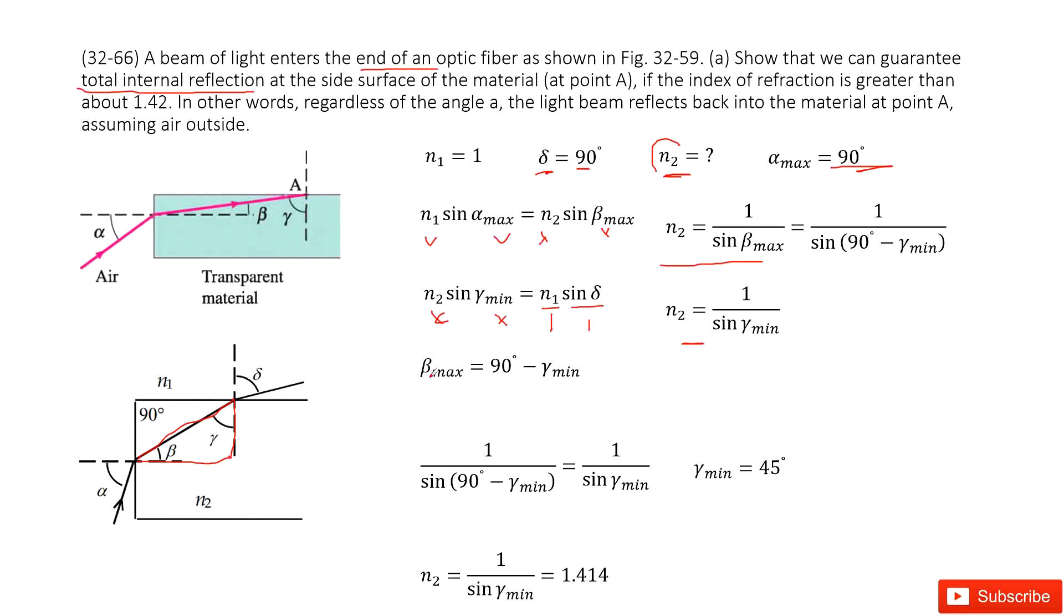For this equation, we have beta_max. So we input beta_max inside, it becomes sin(90 degrees minus gamma_min). Now from these two equations, you can see n2 can equal this term, n2 can also equal this term. So that means these two terms should equal. So we can get the angle for gamma_min. Gamma_min is 45 degrees, right?